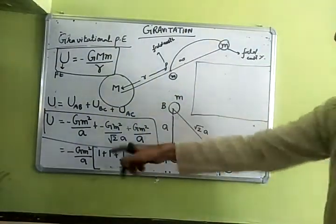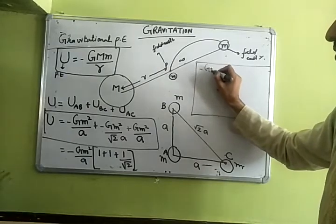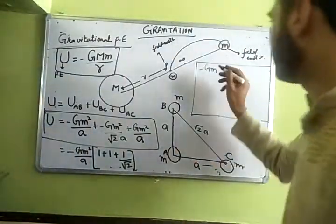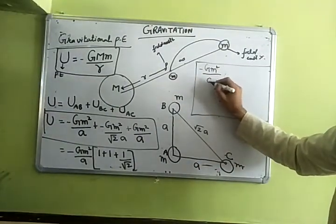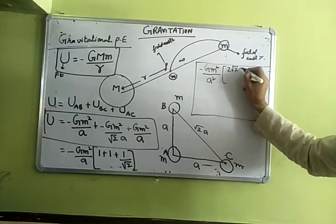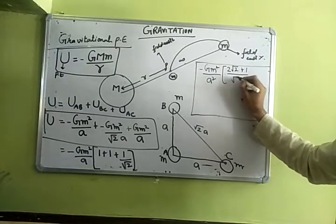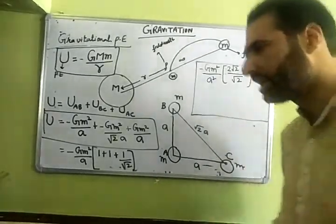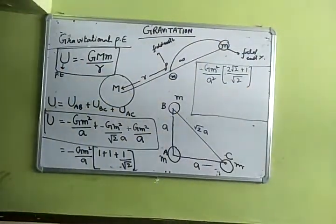It will be minus G M squared by a times 2 root 2 plus 1 divided by root 2. This will be the solution to this question. Is that clear?